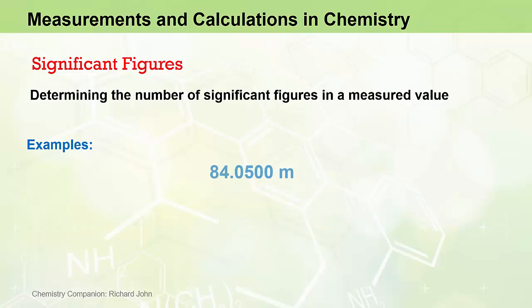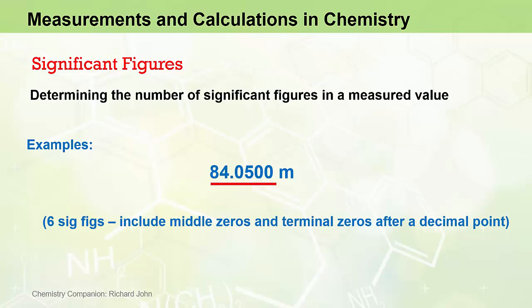Similarly, with 84.0500 metres, we include the middle zero and the terminal zeros after the decimal place. So all the figures are significant, meaning we have six significant figures in this measured value.